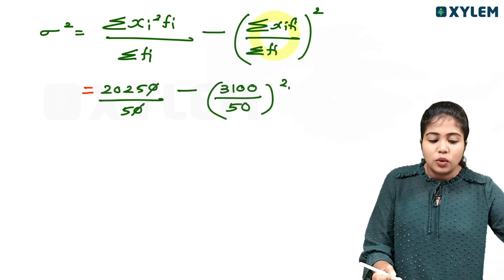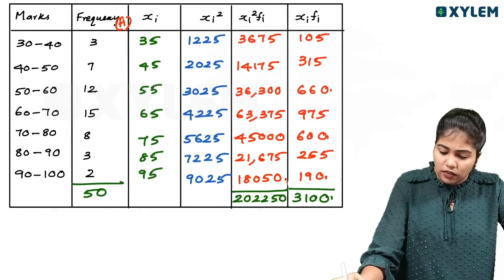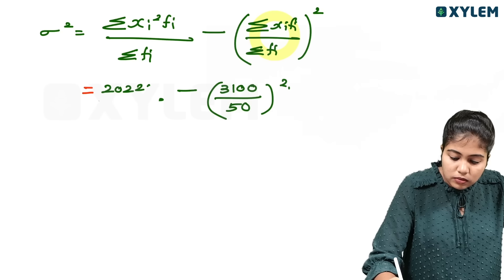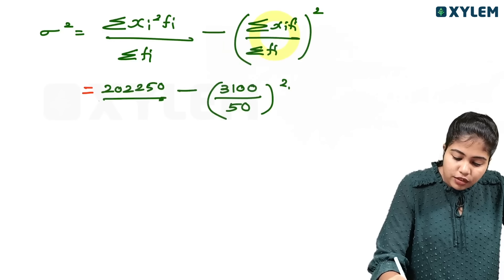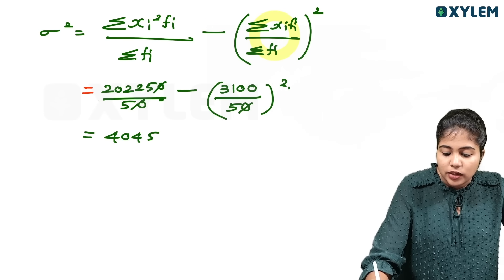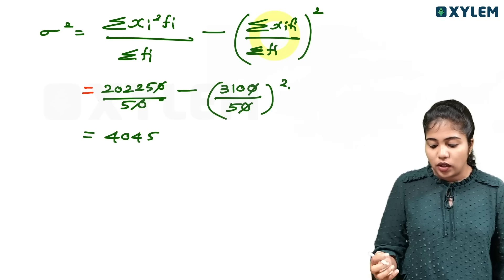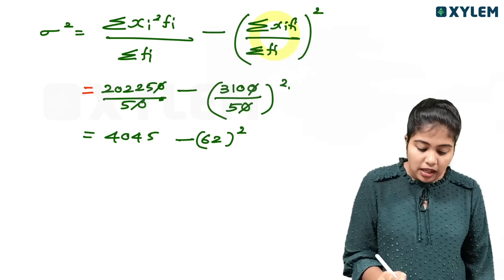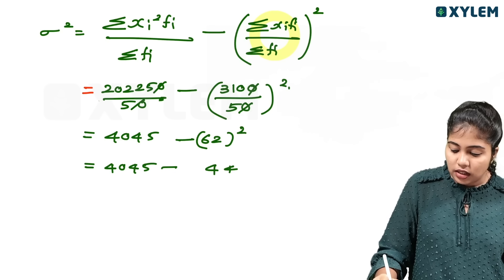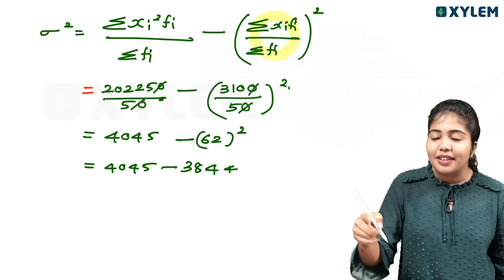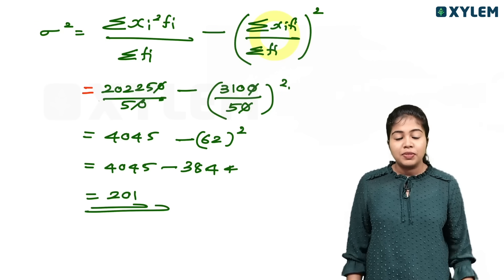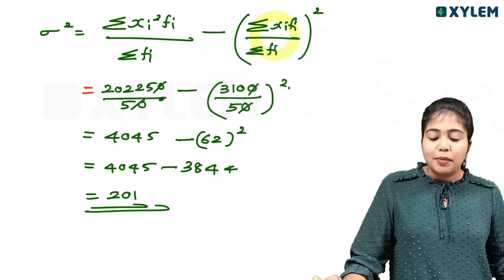Now, 202250 divided by 50 gives 4045. Then 3100 divided by 50 is 62. So 4045 minus 62 squared — 62 squared is 3844 — so 4045 minus 3844 equals 201. That means sigma squared, the variance, is 201.